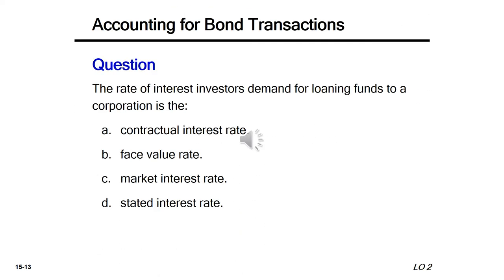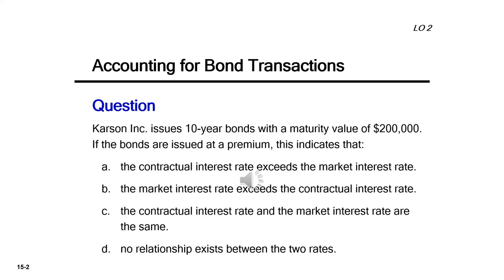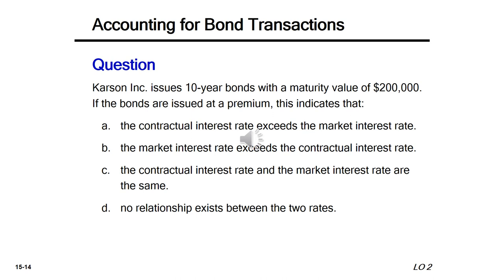Quick question: the rate of interest investors demand for loaning funds to a corporation is the market interest rate — answer C. Another question: Carson Inc. issues 10-year bonds with a maturity value of $200,000 issued at a premium. This indicates that the contractual interest rate exceeds the market interest rate, so the correct answer is A — since the bond sells at a premium, the contractual rate is higher than the market rate.